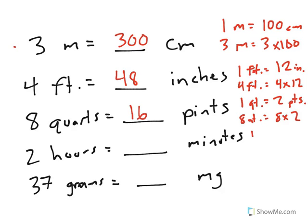Hours to minutes. 2 hours. If 1 hour has 60 minutes in it, then 2 hours would be equal to 2 times 60 or 120 minutes.